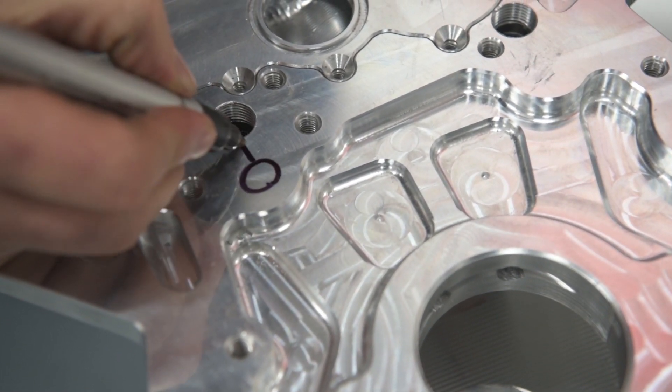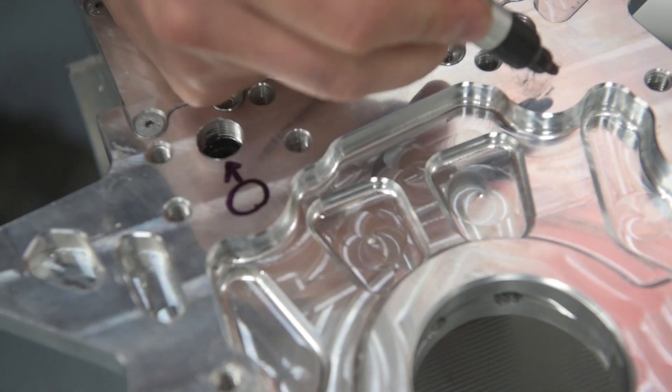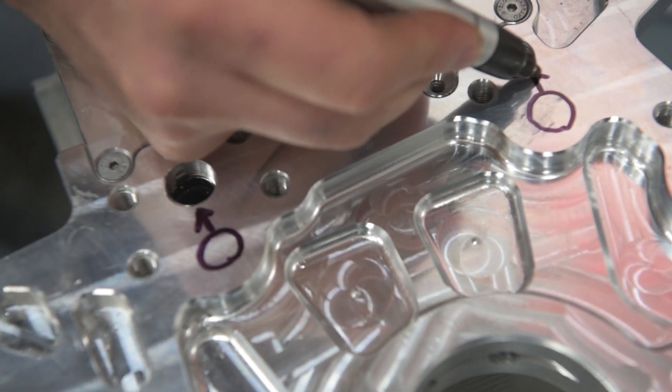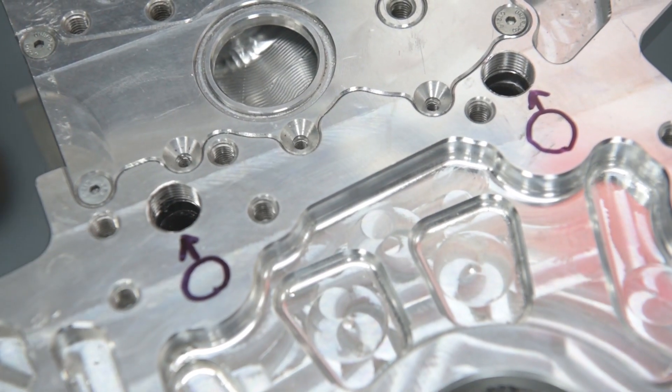But also, if you do have a conrod failure, it's much less likely to take out the oil gallery, which becomes a bigger repair than if there's just some internal damage there.